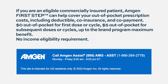If you are an eligible commercially insured patient, Amgen First Step can help cover your out-of-pocket prescription costs, including deductible, coinsurance, and copayment. There is a $0 out-of-pocket for the first dose or cycle, and a $5 out-of-pocket for subsequent doses or cycles, up to the brand program maximum benefit.